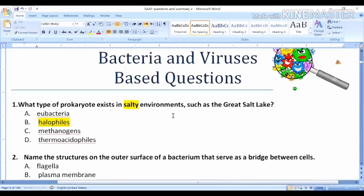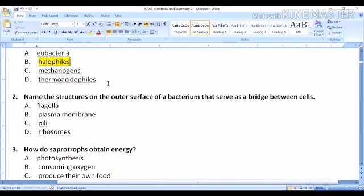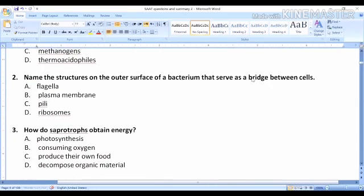Second question: Name the structures on the outer surface of a bacterium that serve as a bridge between cells. Bridge here is the key word. It's pili, you can call it. Pili is one of the structures the bacterium has. The bacterium has pili, capsule, cell wall, cell membrane, ribosomes, flagella - all of these are structures, but which helps the bacteria to make a bridge between it and another bacterium? Of course, for conjugation, the process of exchanging genetic material. Yeah, it's pili. Here, small hair-like projections on the capsule of the bacterium.